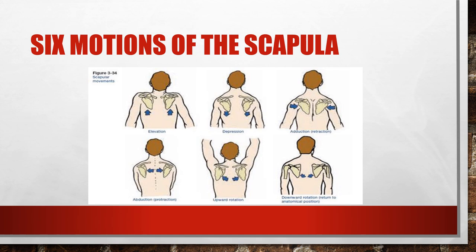Adduction, also known as retraction of the scapula, brings the scapula back toward the midline. Abduction, also known as protraction, moves it forward. Upward rotation involves the inferior angle moving upward and outward. Downward rotation brings the inferior angle back down toward the midline.